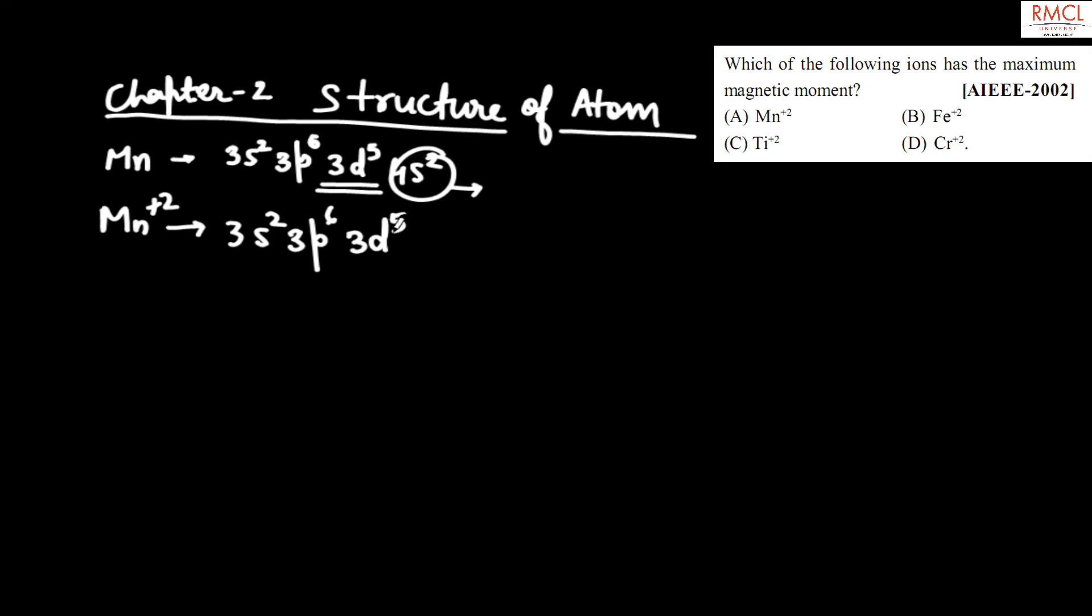Therefore, the maximum moment for d⁵ unpaired electrons present in d orbital. So that's why the maximum moment is in Mn²⁺ ion. The correct option is option A, Mn²⁺.